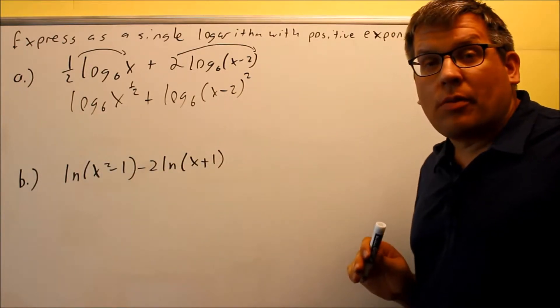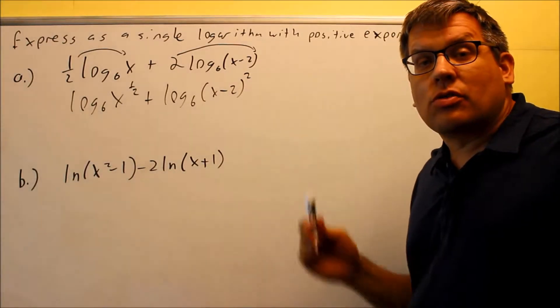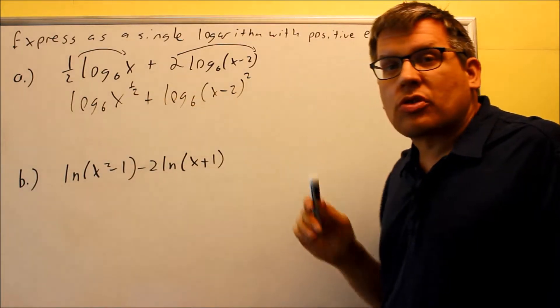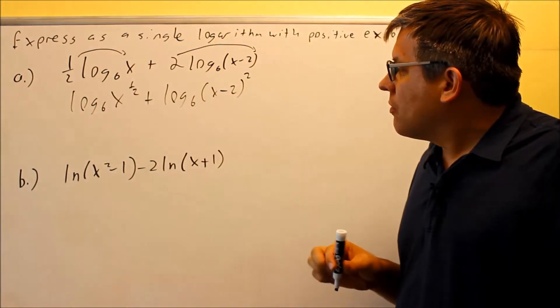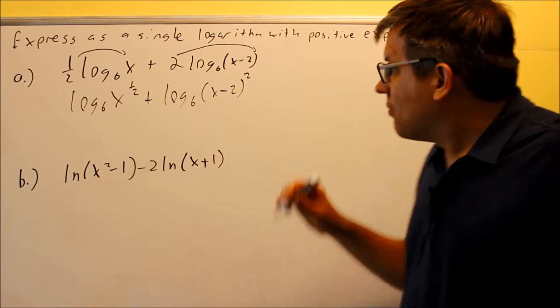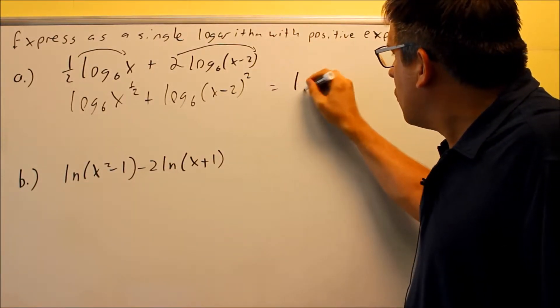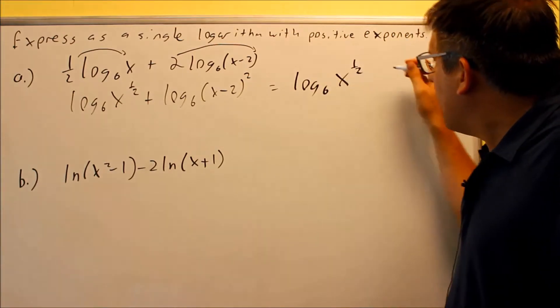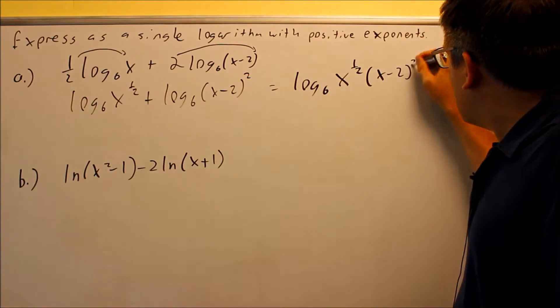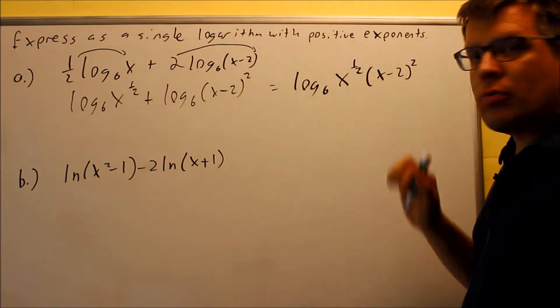Now that I've brought the powers up, now I need to combine these together into a single log. I'm going to use rule number 6 for this. There are two of these with a plus sign in between, plus sign means it will turn into multiplication. So this is going to turn into log 6, I have x to the 1 half, and then I'm multiplying that by x minus 2 squared.